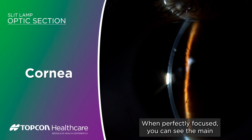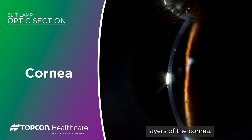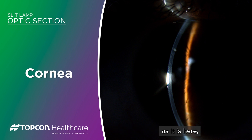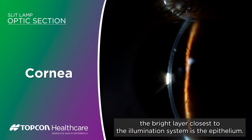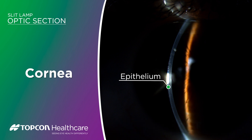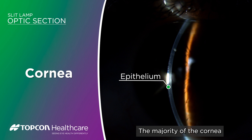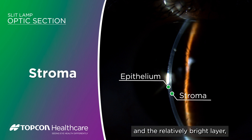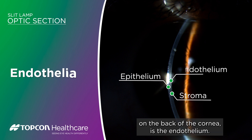When perfectly focused you can see the main layers of the cornea. With the illumination system on the left as it is here, the bright layer closest to the illumination system is the epithelium. The majority of the cornea is the stroma, which has the grainy appearance, and the relatively bright layer on the back of the cornea is the endothelium.